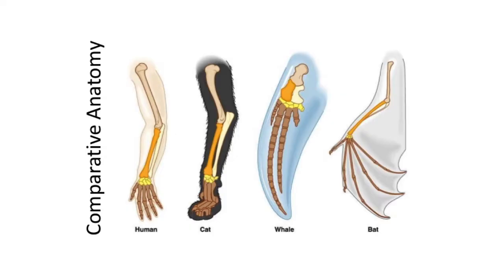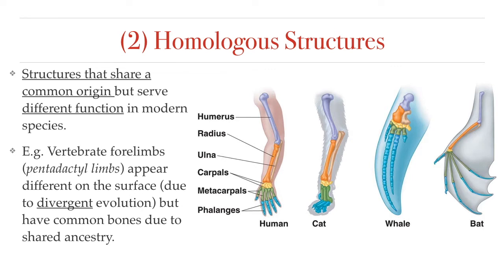Now let's talk about how comparing the anatomy of present-day species can provide us with evidence that they evolved from a common ancestor. Let's start with homologous structures. If we notice that two or more species share a unique physical feature — like, for example, a complex bone structure in their arms — then they may all have inherited that feature from a common ancestor. We call these physical structures that are similar because of a shared ancestor homologous structures, or homologous traits. What makes homologous structures more revealing of a shared ancestry is when they are the same in different species, even though they use them for completely different purposes.